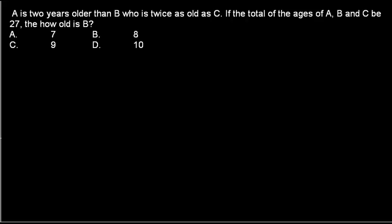Okay guys, so now let's solve a classic age-related problem that is very common and very easy to solve. A is two years older than B who is twice as old as C. If the total of the ages of A, B, and C is 27, how old is B?